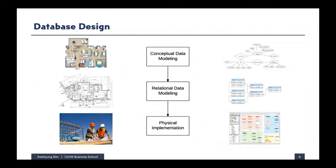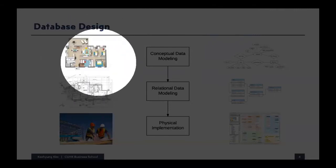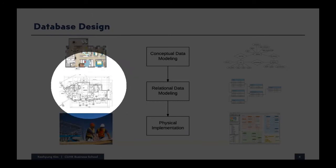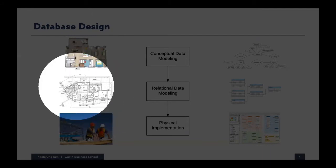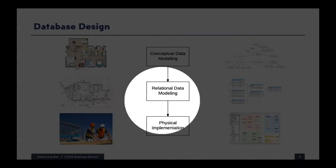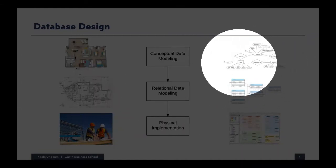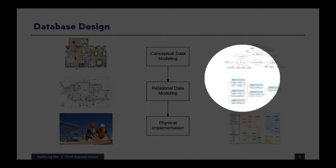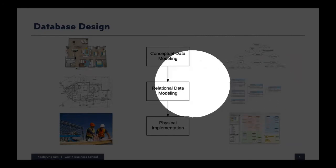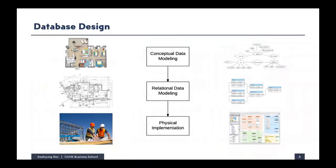Once you have an entity relationship diagram, you move to the second step: relational data modeling. Here you put more specific details of how your database should be designed — like putting exact measurements on a floor plan. You determine which attributes should be included in each table, what should be the primary key, what should be the foreign key, and the data type of each element. We will talk about relational data modeling in the next class.